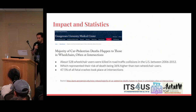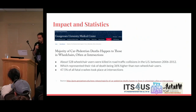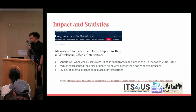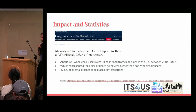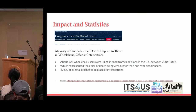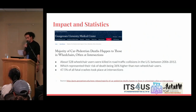Closing the circle — this is really important: the majority of car-pedestrian deaths happen to those in wheelchairs, often at intersections, and wheelchair users face a risk 36 times higher than non-wheelchair users. That's why the work the OSM community is doing to help people in wheelchairs find safe paths matters. Mapping a crossing correctly with wheel ramps and raised curbs is directly helping people.